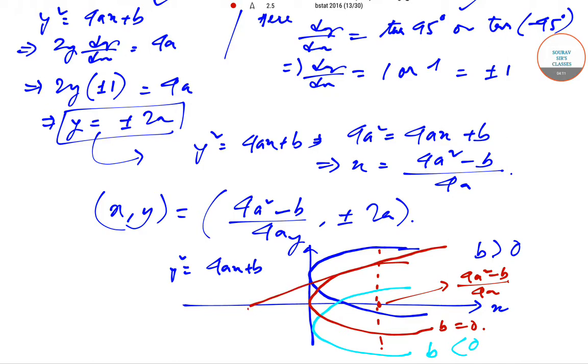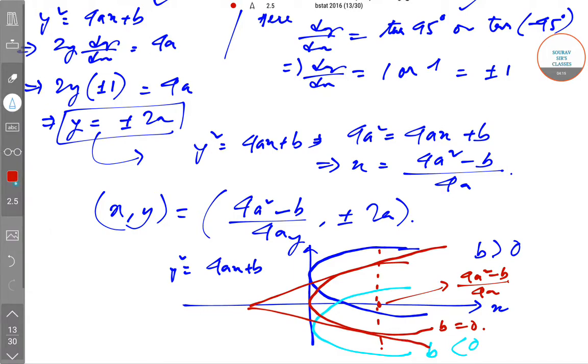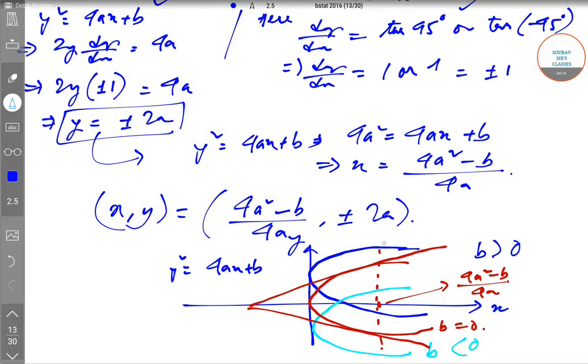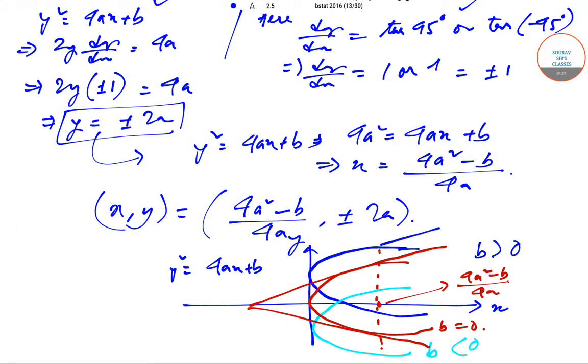So basically this will look like this. This is one, another one can be made like—somewhat like this. Basically they make 45° angles.